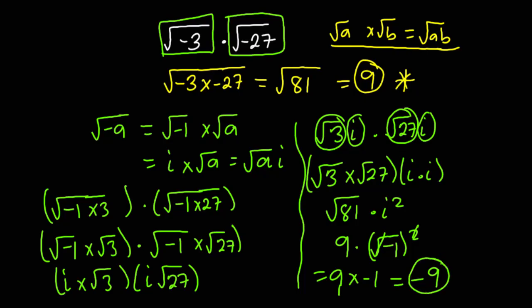And so this gives us negative 9. The correct answer to √(-3) × √(-27) is -9. Thank you for watching this video — please leave your comments in the comment section and let me know if there is any other way to solve this. Thank you, bye bye.